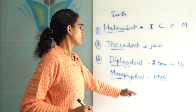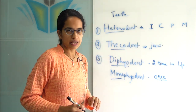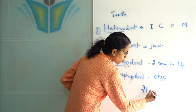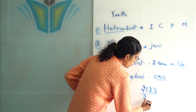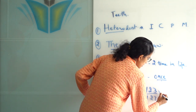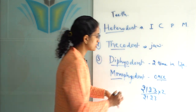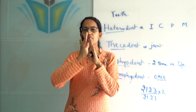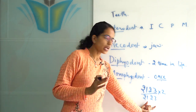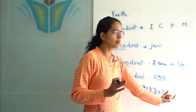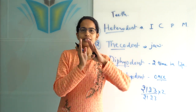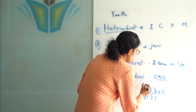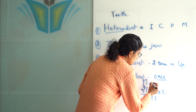To understand which teeth occur only once, we need to look at the dental formula. The dental formula for an adult is 2-1-2-3 over 2-1-2-3, multiplied by 2. We take half of the upper jaw and half of the lower jaw and multiply by 2 for left and right sides. Here 2 stands for incisors, 1 for canine, 2 for premolars, and 3 for molars.